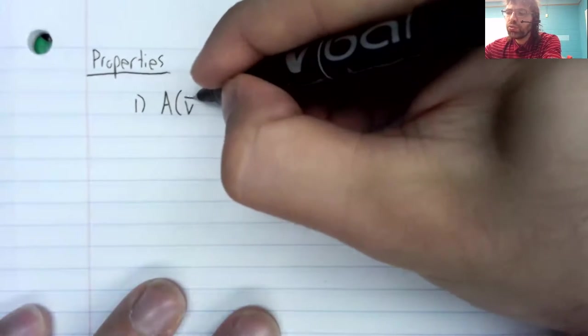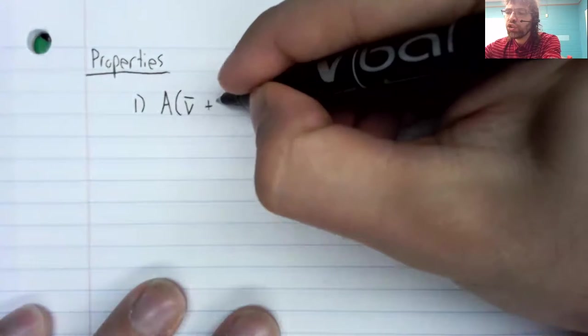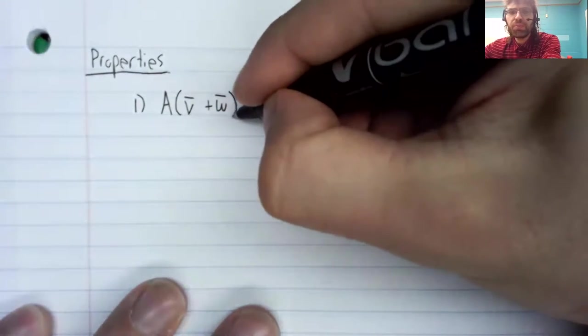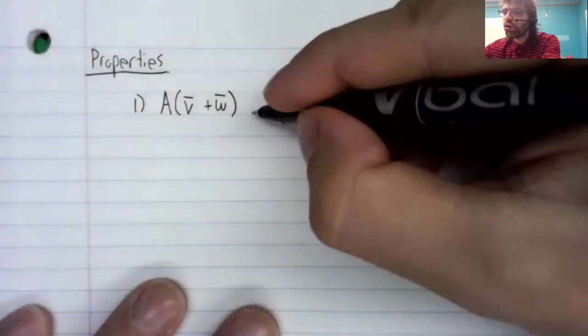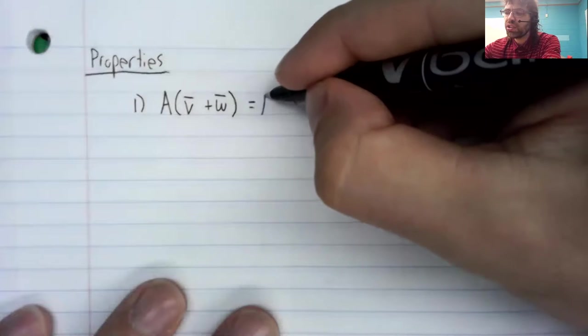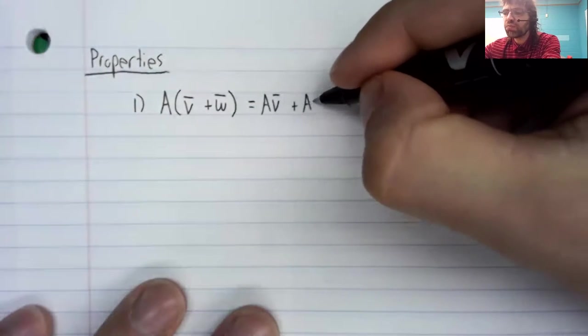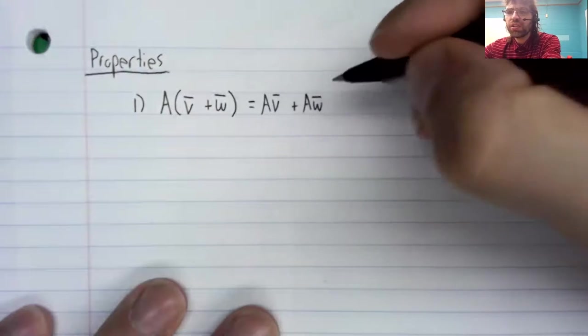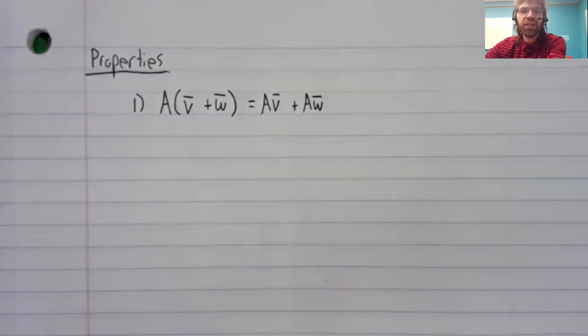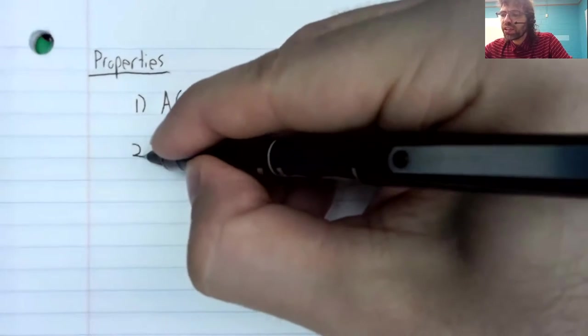First, we are used to multiplication distributing over addition. And that is a property that this definition gives us. Matrix vector multiplication distributes over vector addition.